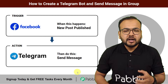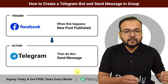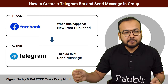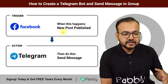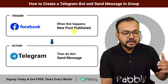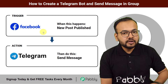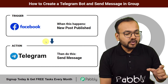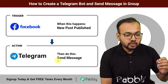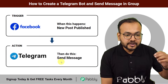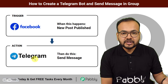So guys, let's suppose that you are creating any automation in which you are connecting Telegram with any other application to send the data from that application as a new message in Telegram. For example, we have taken Facebook Page as a trigger application. The use case here is that as and when a new post is published on Facebook, the data of that post will be delivered as a message in a Telegram group. And basically, I want to show you how you can connect Telegram in this action step and how you can send the automated message.